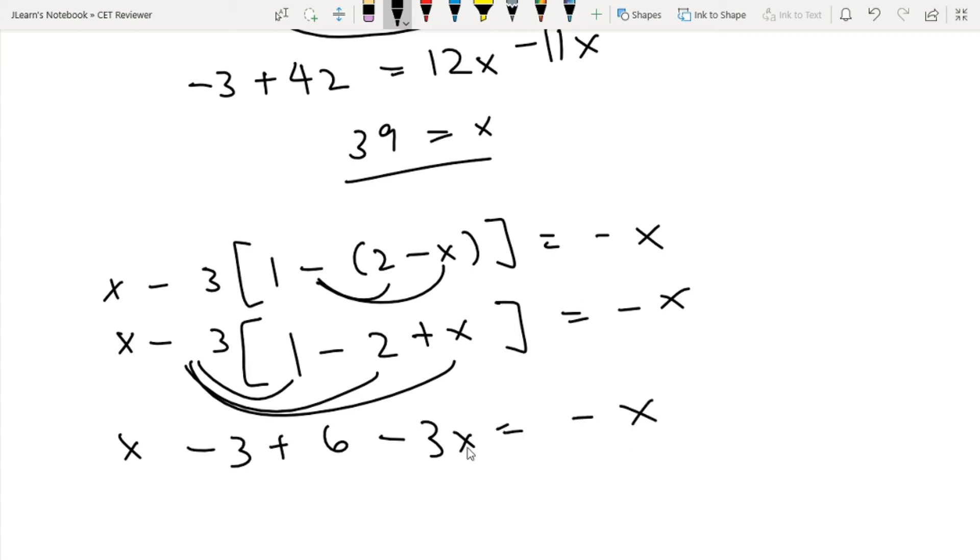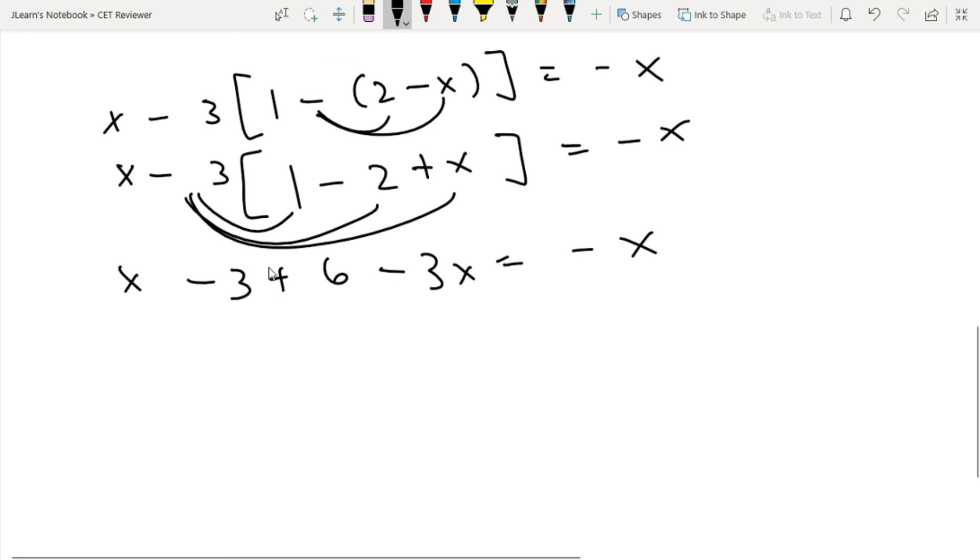And again, we can just simplify the terms. So X minus 3X, that will be negative 2X minus 3 plus 6 will be positive 3, then still equal to negative X.